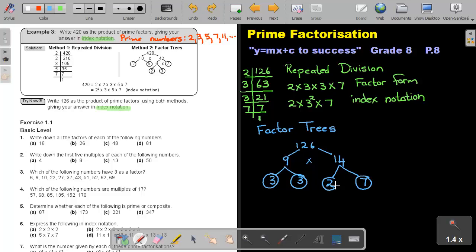Both of them are again prime numbers. So, if I write it in factor form, it will be 2 times 3 times 3 times 7. That will be factor form. But, don't forget that I asked it in index notation. So, that will be 2 times 3 to the power of 2 times 7. That will be index notation.